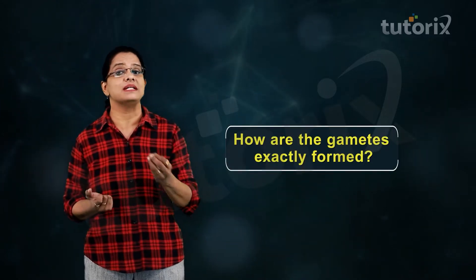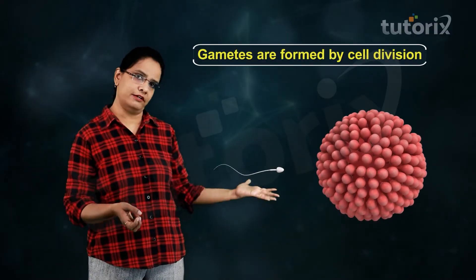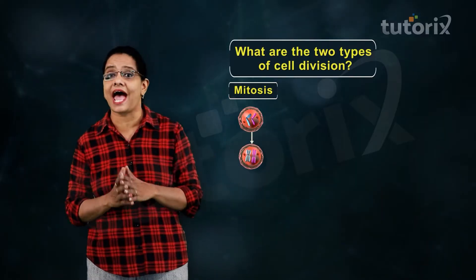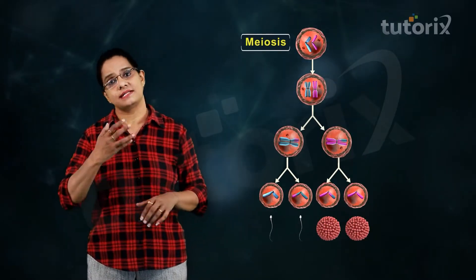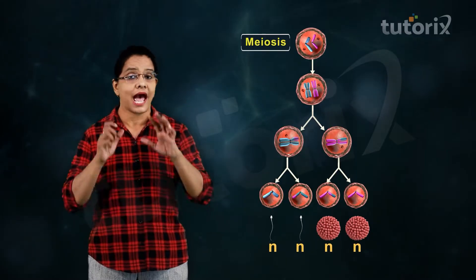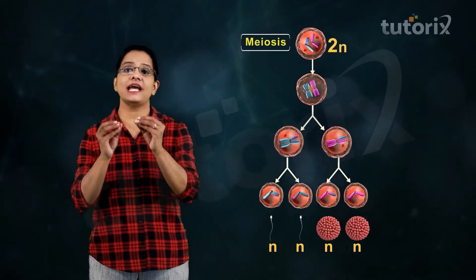Gametes are formed by cell division — the two types being mitosis and meiosis. Gametes are always haploid, regardless of whether the parent body is haploid or diploid.